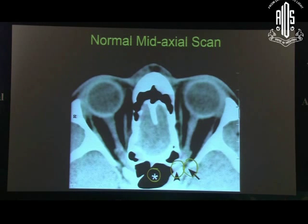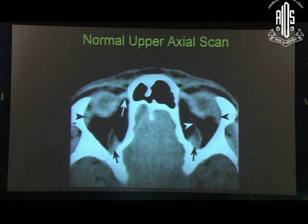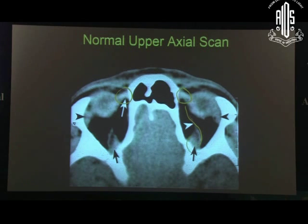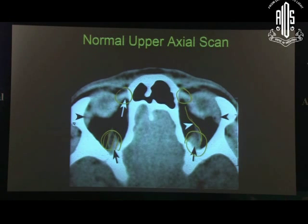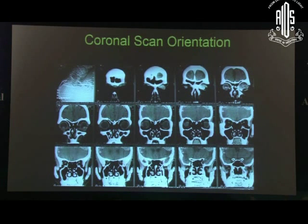You also see the extraocular muscles — the lateral rectus, medial rectus, the trochlea comes into view, and the optic nerve is seen very nicely, as is the eyeball. Further details include the superior oblique, and the structure running like this is the superior ophthalmic vein. Enlarged superior rectus — the superior rectus LPS complex — can sometimes be visualized as an intraconal lesion. And what about this structure? The lacrimal gland. Depending on what you are looking at, you can identify all the normal structures.